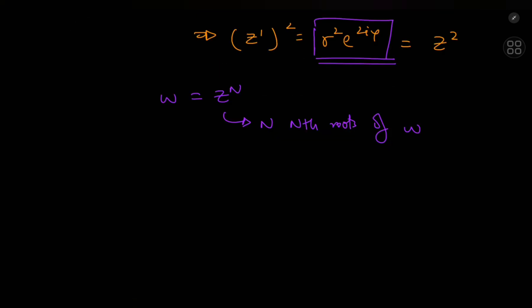By a similar token, there are n nth roots of any nonzero complex number w, and we can find them using the polar forms of w and z. Write w = ρ·e^(iθ) and z = r·e^(iφ). Going from one root to another clockwise, each root is separated by 2π/n radians. We can count the number of rotations from the first root to the kth root, where k takes values 0, 1, 2, … up to n−1.